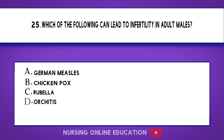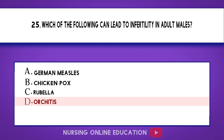Question 25. Which of the following can lead to infertility in adult males? A. German measles. B. Chicken pox. C. Rubella. D. Orchitis. The answer is option D: Orchitis.